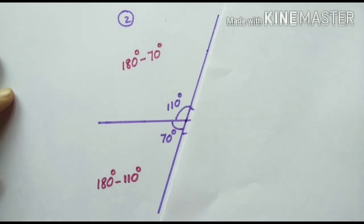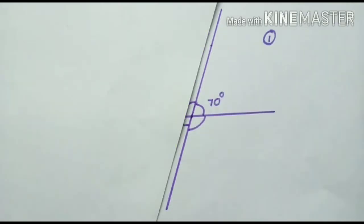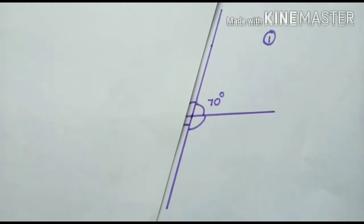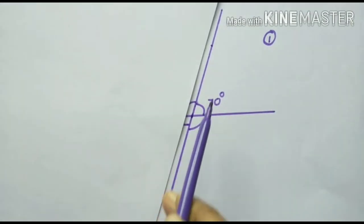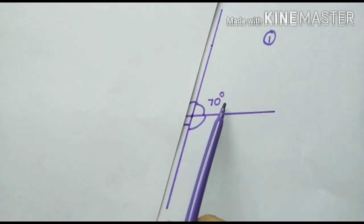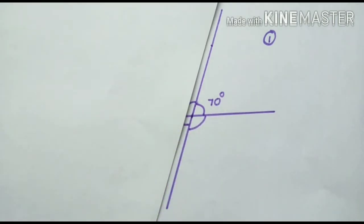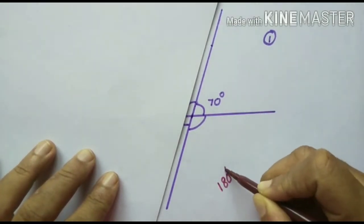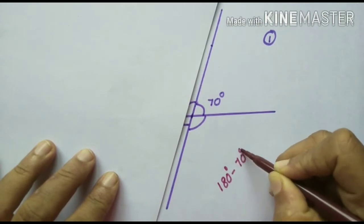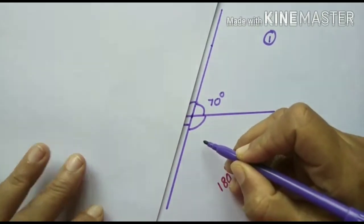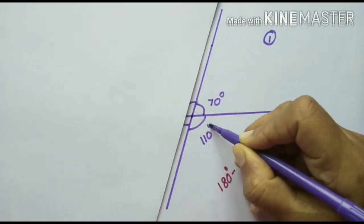Now coming to the right side — forget about the left side. Here also there is a straight line and we have two angles on it. One angle is given as 70 degrees. We find the unknown angle by subtracting 70 degrees from 180 degrees. So we get the angle as 110 degrees.